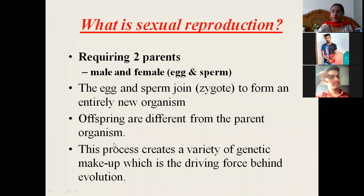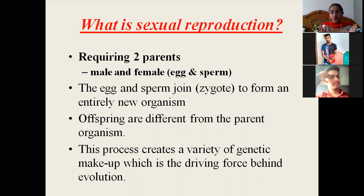In sexual reproduction, offspring are different from the parent organisms because proper fusion is taking place. This process creates genetic variability, which is the driving force behind evolution. Sexual reproduction creates genetic variation, whereas in asexual reproduction there is not much genetic variation — all progenies have the same genetic constitution as the parents because only one parent is involved.